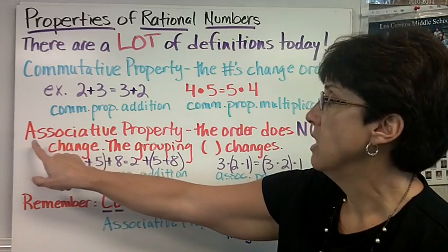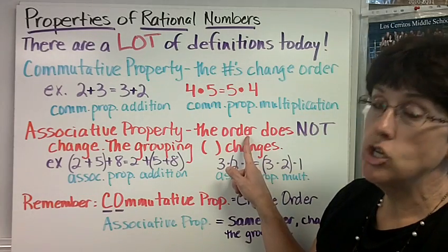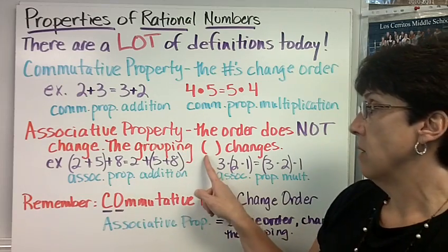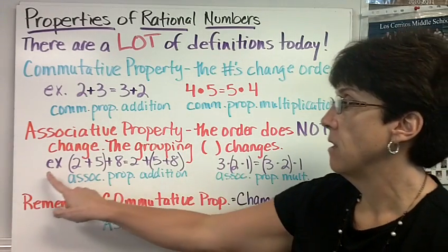The next property - the associative property. The order does not change when you read the numbers on either side of the equal sign. The grouping, the parentheses, that's the grouping, changes.